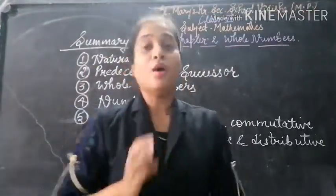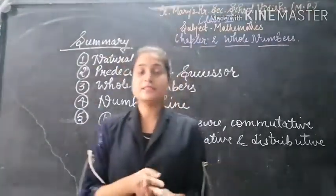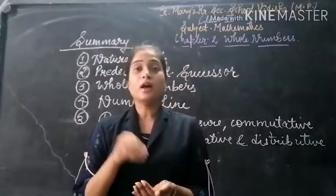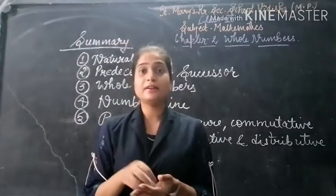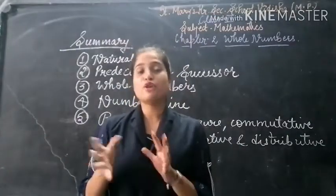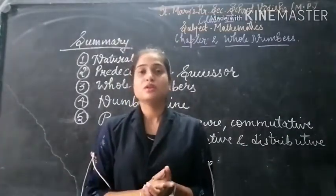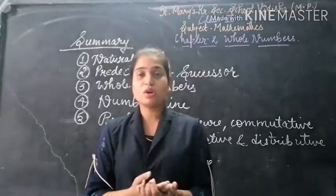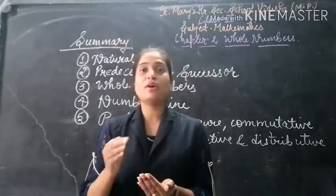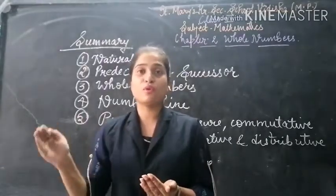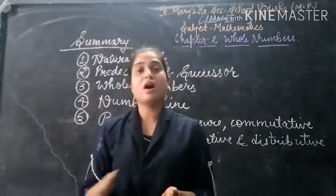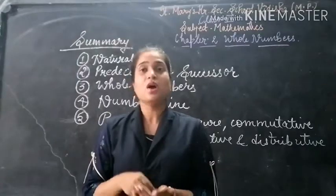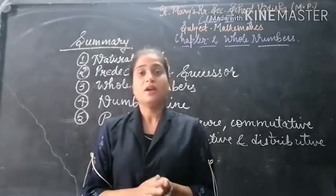When we add 0 to the natural numbers, we get the collection of whole numbers. So what are whole numbers? 0, 1, 2, 3, 4, 5, and so on are known as whole numbers.